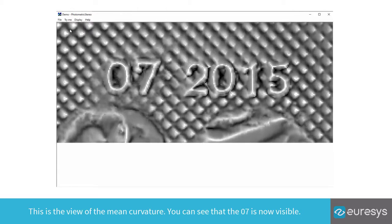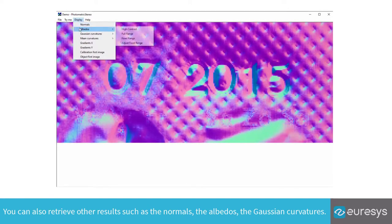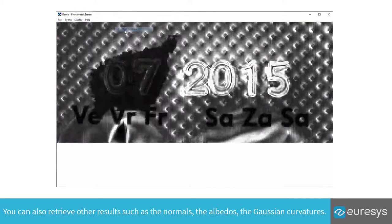This is the view of the mean curvature. You can see that the O7 is now visible. You can also retrieve other results such as the normals, the albedo, the Gaussian curvatures.